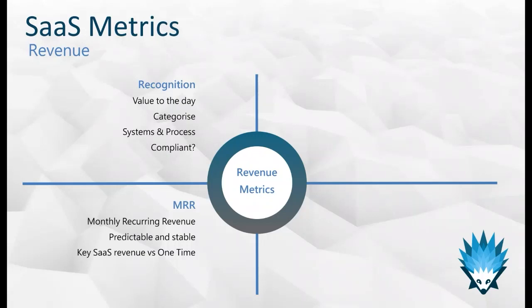Once revenue is recognized correctly, we move to a very key term in the SaaS market: Monthly Recurring Revenue (MRR). The great thing about MRR is it keeps coming back — it's highly valued, predictable, and stable. Where you are one month you'd expect to be roughly the same the next month, with incremental new sales on top. A key thing you need to ensure in your chart of accounts is being able to split out your SaaS recurring revenue from one-time revenue — any services not baked into recurring revenue need to be clearly defined and separated.